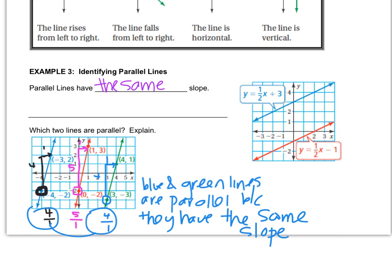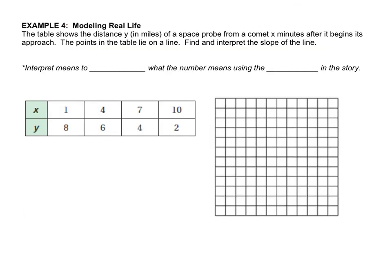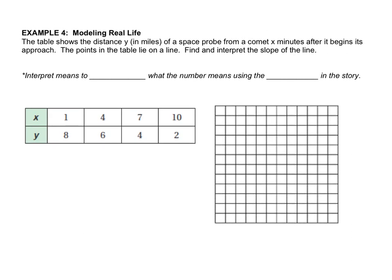And what we're going to do is it gives us this story about the distance of a space probe from a comet and after a certain number of minutes and they want us to find and interpret the slope which as I said would be like the speed of the line how quickly is this comet moving so we're going to get to this interpreting sentence in a moment the easier thing to do is just to plot the points and find the slope so I'd like you to make me a big l a big first quadrant grid because if you notice all the numbers are positive and I want you to plot the points and then when you're done plotting the points press play.